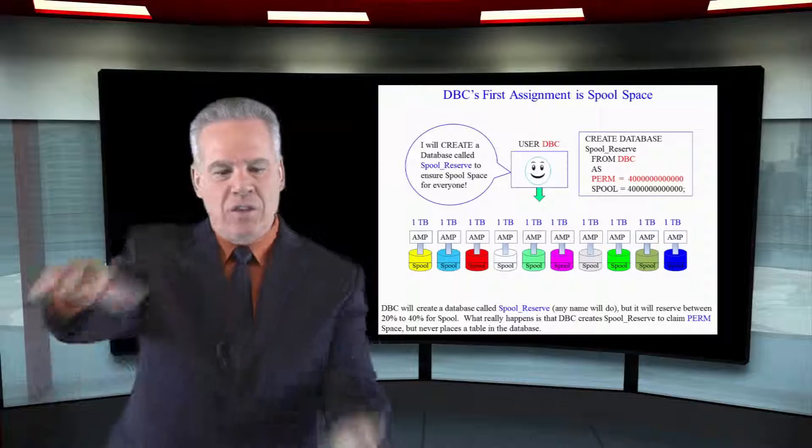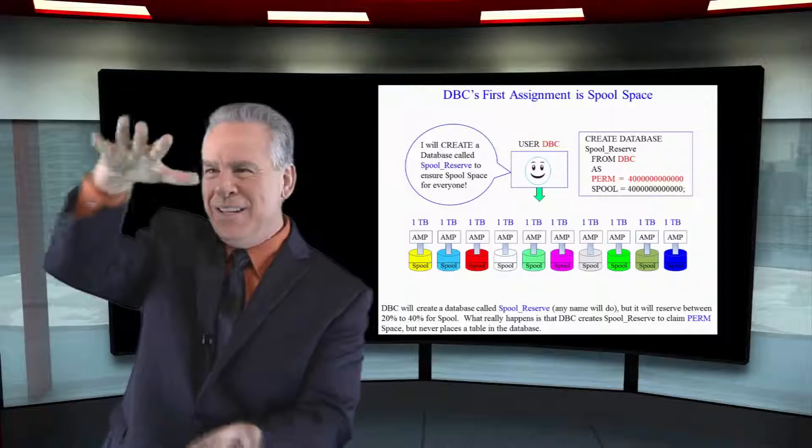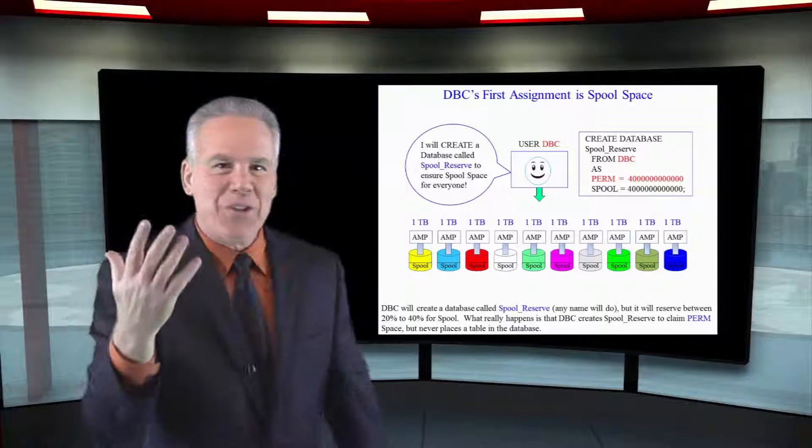We realize that space is all perm space. DBC owns all space and it's all perm space.